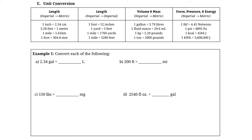Everyone converts units a little differently. I'm going to show you the way I think is most effective for physics, which makes the fewest mistakes and enables unit analysis later. So first: convert 2.34 gallons to liters. Looking at our table, one gallon equals 3.79 liters. You could think about it logically — liters are smaller than gallons, so in 2.34 gallons there will be more liters, meaning we need to multiply.